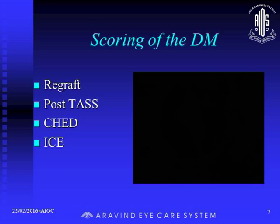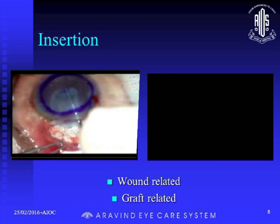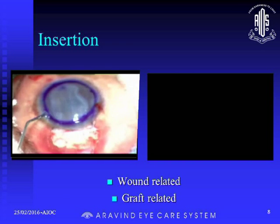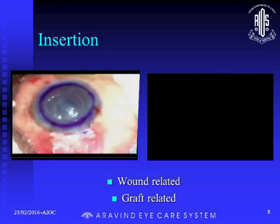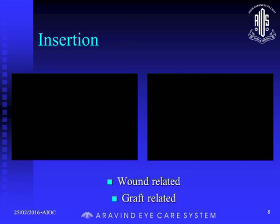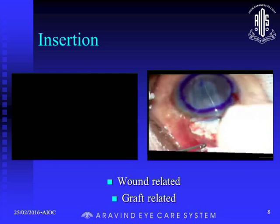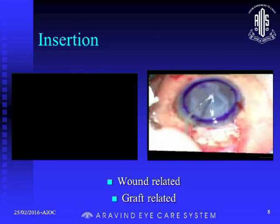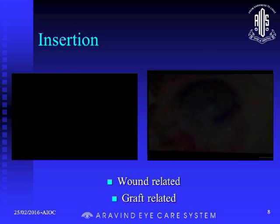In case of insertion, if the wound is too small or too narrow, whatever be your way of insertion, better to avoid excessive manipulation. You can imagine the amount of endothelial cells you are going to lose in such difficult insertions. Same way, if the wound is not properly made and it is too leaky, especially when you are using too many instruments like a glide, while removing you have to be very careful, especially with a thick graft — it can come out.